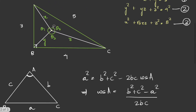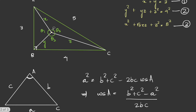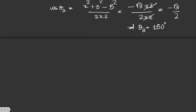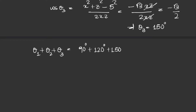Now we have all three angles: theta1, theta2, and theta3. We verify our hypothesis by adding them up and checking if they sum to 360 degrees. Theta1 plus theta2 plus theta3 equals 90 plus 120 plus 150, which gives us 360 degrees. This confirms our hypothesis that point P lies inside the triangle with the assigned distances.